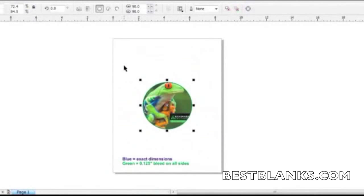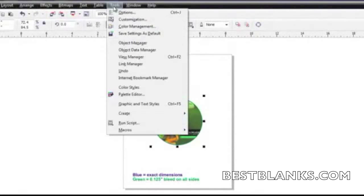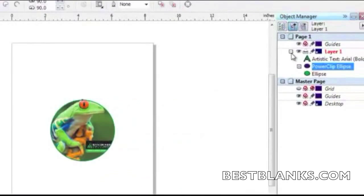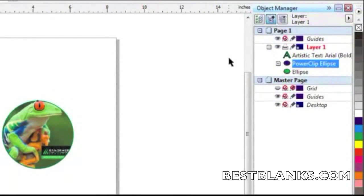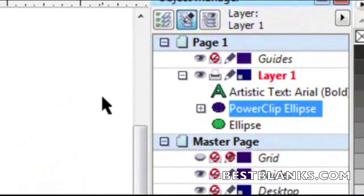The final step is to delete the template and template text so they don't print with the graphic. Click on tools, then click on object manager. Note that a new window opens, which should show the layers of the file you're working on. If the layers are not shown, click on the plus sign located next to layer one.